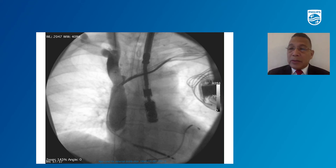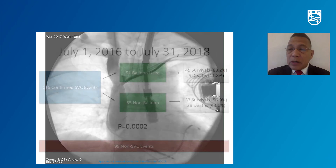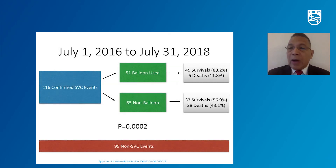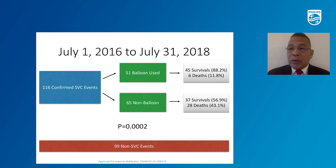We did a study looking at SVC injuries in the United States, in which surgeons were present at the time of injury and opened the chest with median sternotomy and repaired the superior vena cava. We divided patients into two groups: one in which the balloon was used — with 88% survival — and a second group in which the surgeon was present but the balloon was not used — with 56% survival. Even though the surgeon opened the chest and repaired the SVC in both groups, the use of the balloon definitely improved survival, and this was statistically significant.